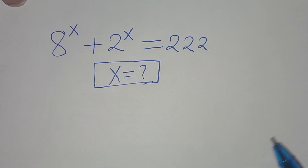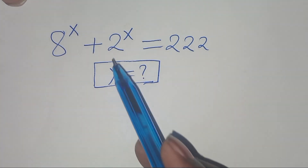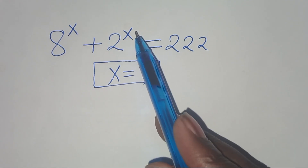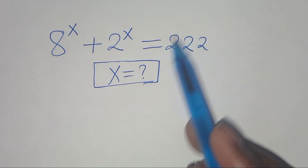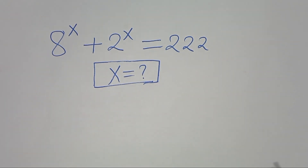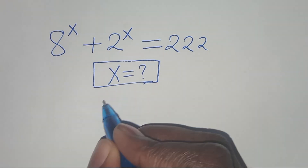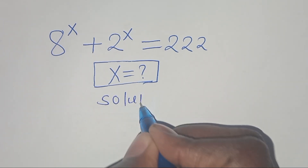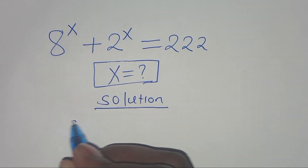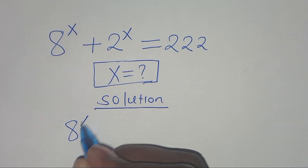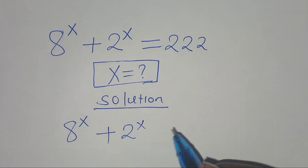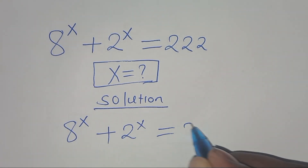Hello everyone, you are welcome to solve this nice exponential equation, which is 8 to the power x plus 2 to the power x, this is equal to 22. What is the value of x? Now let's present the solution from here. We have 8 to the power x plus 2 to the power x, this is equal to 22.